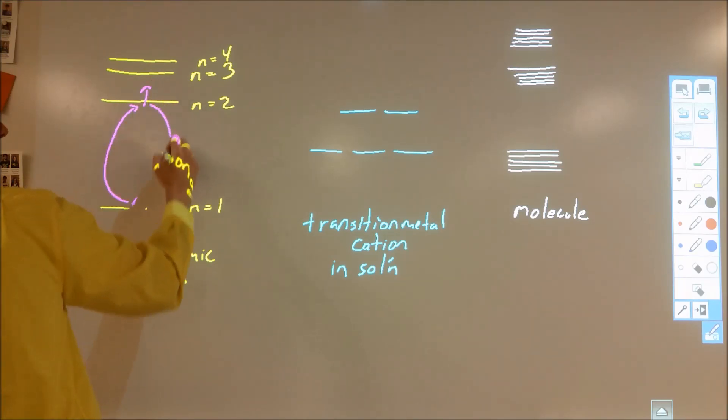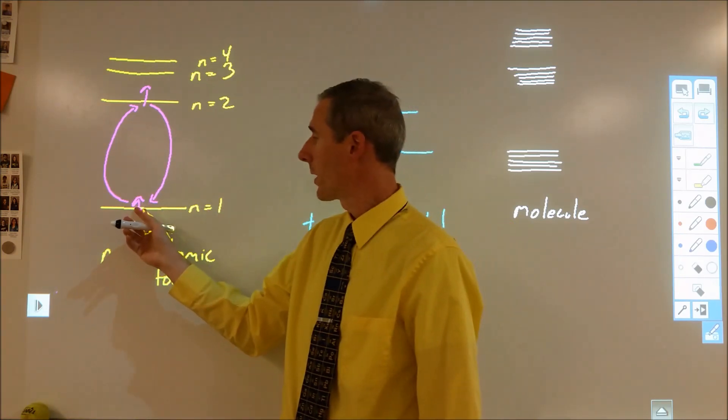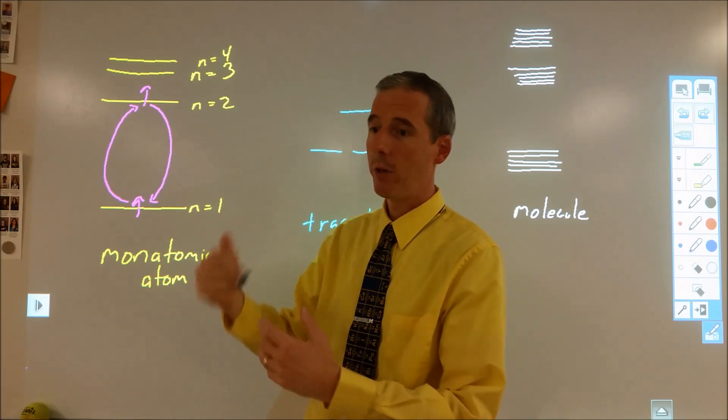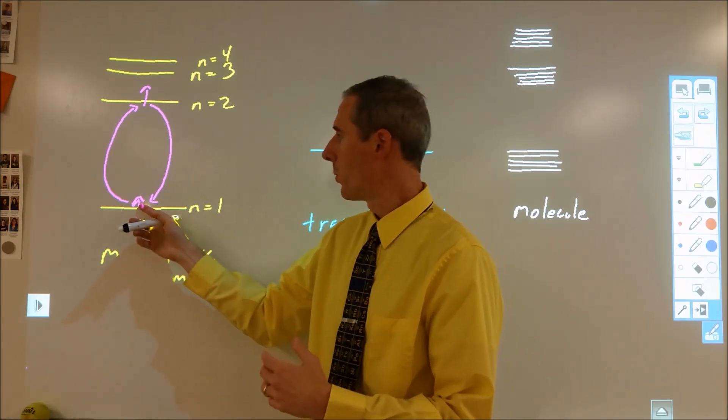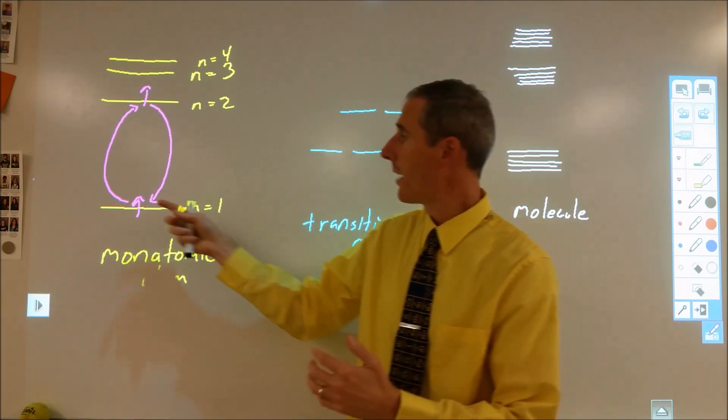An electron might go from a first energy level to a second energy level and then go back. In order for those changes to occur, where the electron is changing its position within that atom, it has to either absorb or emit light.